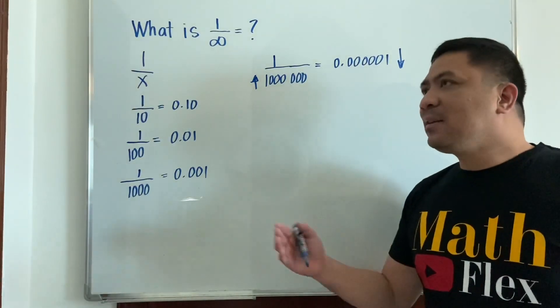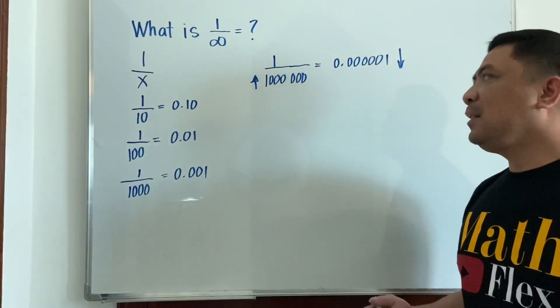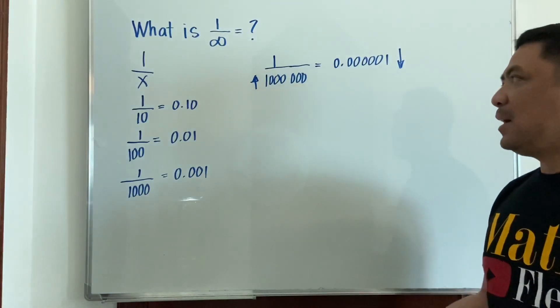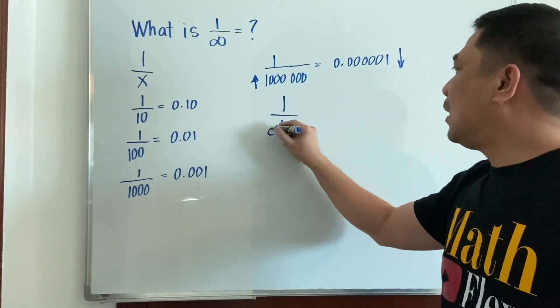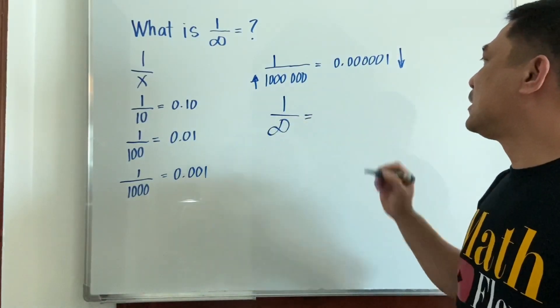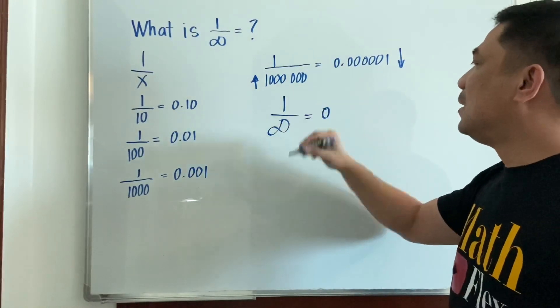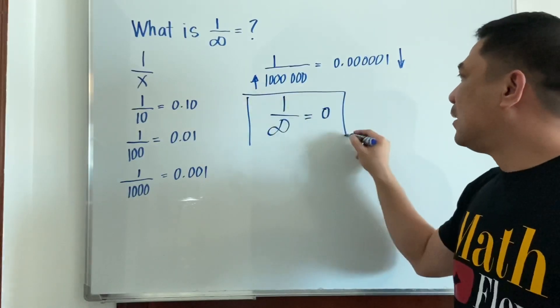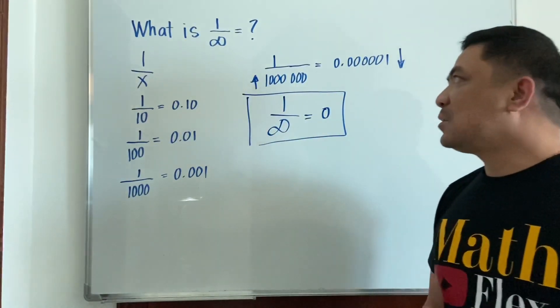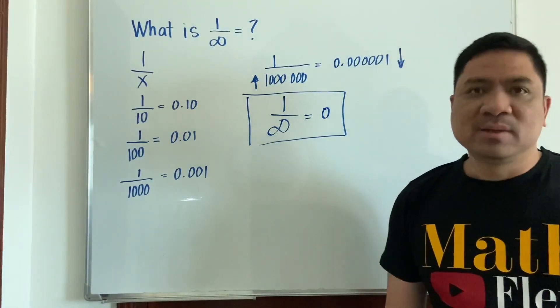So if you will increase the denominator—as we define infinity as the greatest number you can imagine—you will have now a quotient that is almost negligible or close to zero. Therefore, our answer to this question, 'What is 1/∞?', is actually equal to zero.